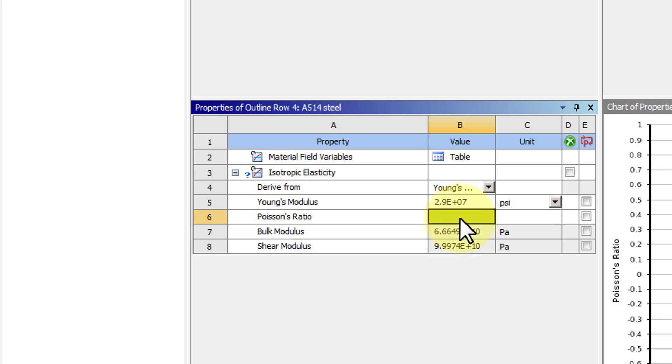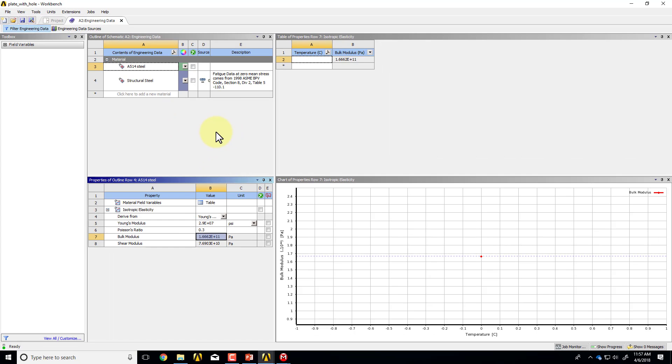And then if I come over here, the Poisson's ratio is 0.3. Now that's only created the material. It hasn't assigned it to the model yet.